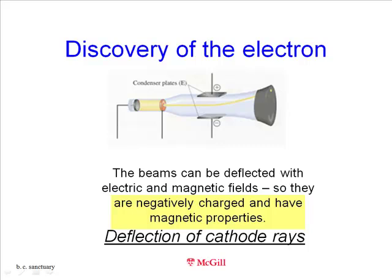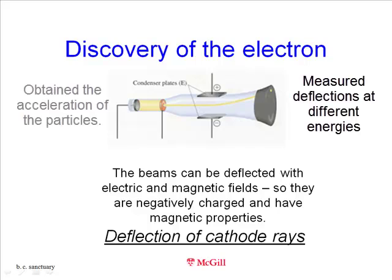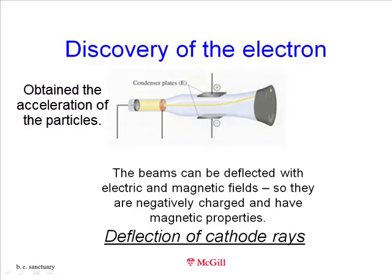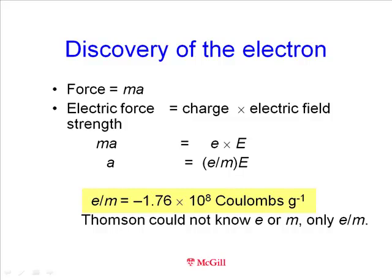Similar experiments with magnetic fields showed that the beam also has magnetic properties. By measuring these deflections and knowing the energy needed, Thompson was able to calculate the acceleration of the particles. Now, electrical force is just charge times field strength. So this must be the charge on the particle of the unknown electron, E, and the applied field strength, capital E, which is known from the experimental setup. Dividing by the mass, the experimental value of the ratio is minus 1.78 times 10 to the 8th coulombs per gram. But this ratio does not give us the actual charge, or the actual mass, only the ratio.